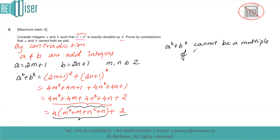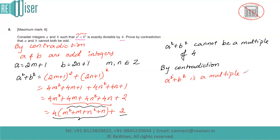We initially assumed that a and b are odd integers, and from that assumption we proved that a² + b² cannot be a multiple of 4. Therefore, by contradiction, we conclude that a² + b² being a multiple of 4 — or equivalently divisible by 4 — requires that a and b are not both odd integers.